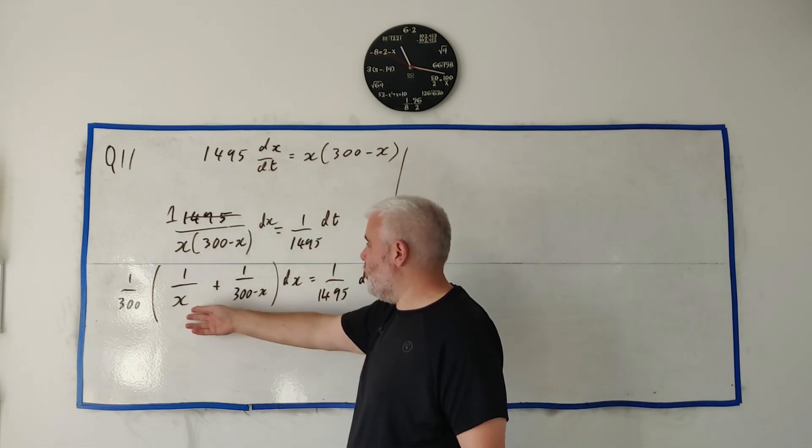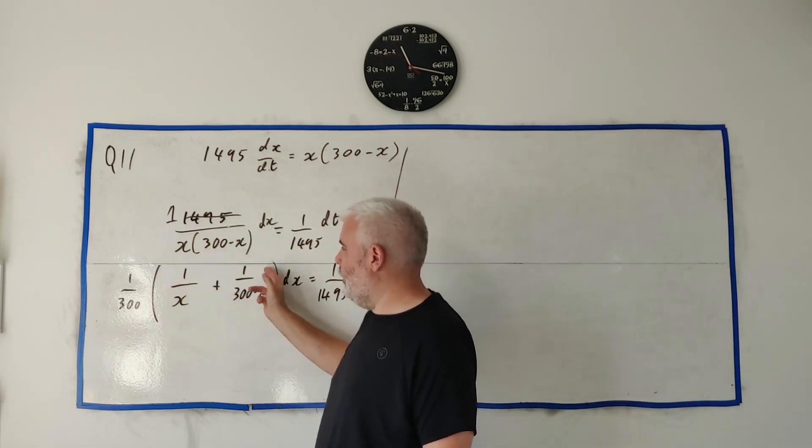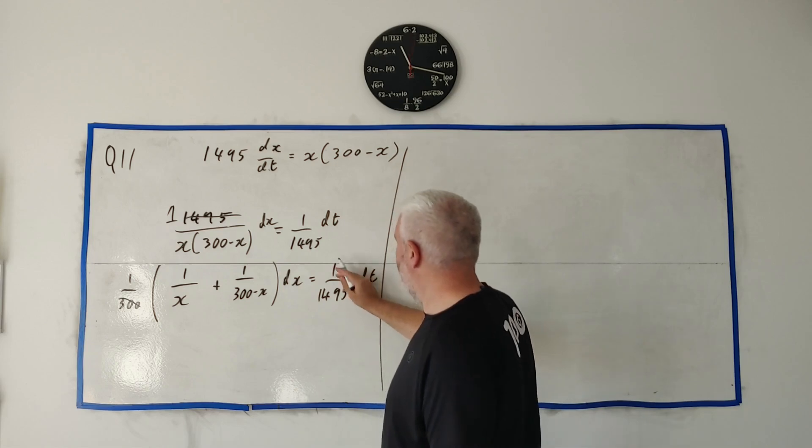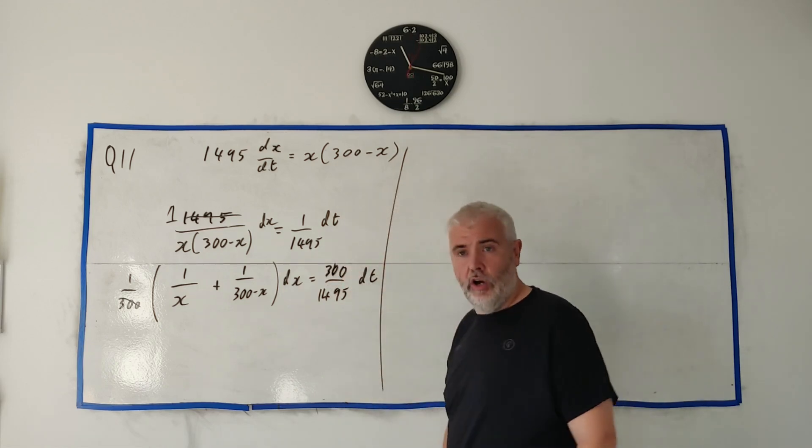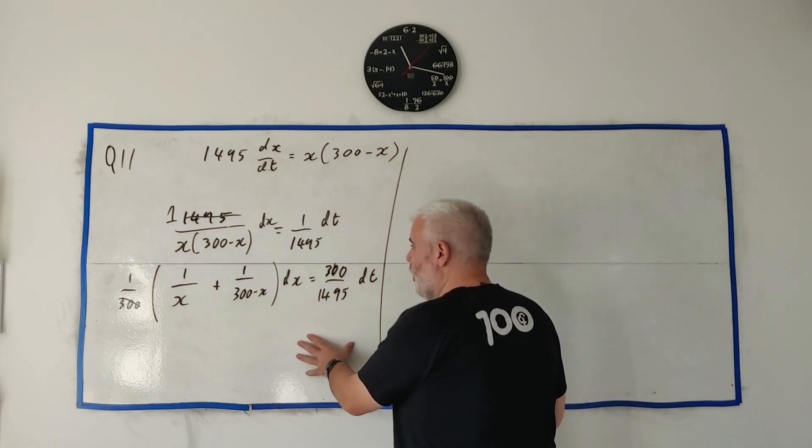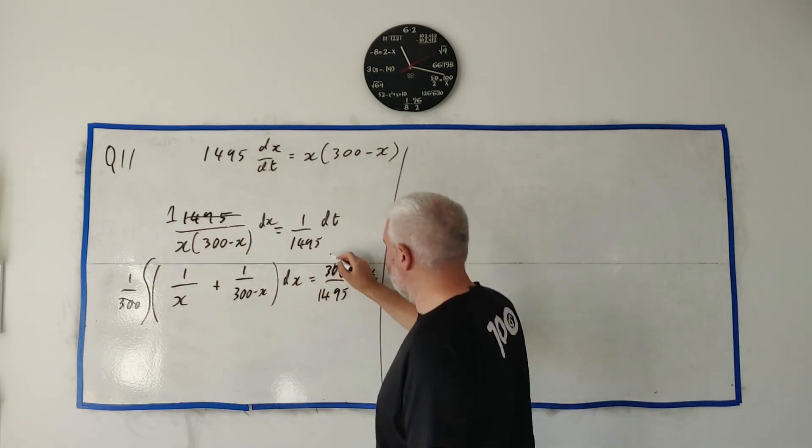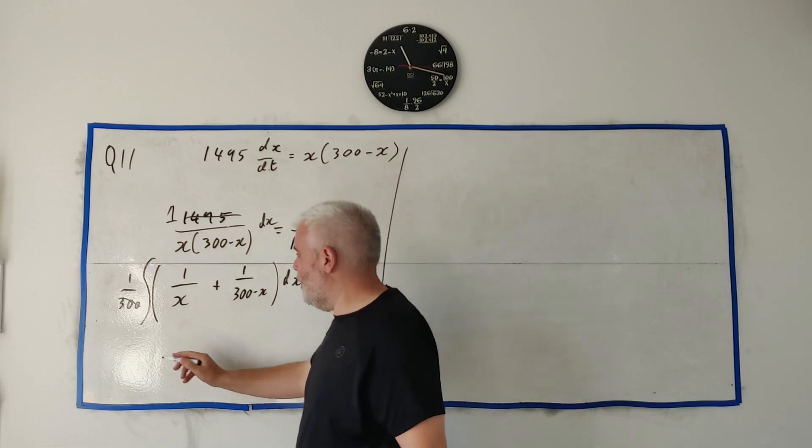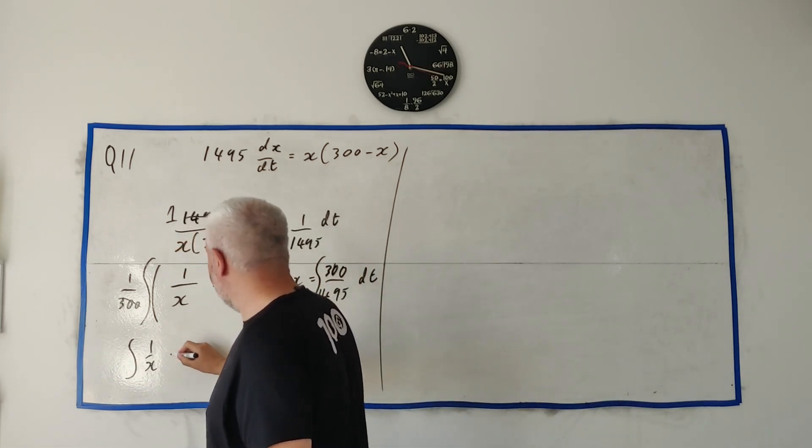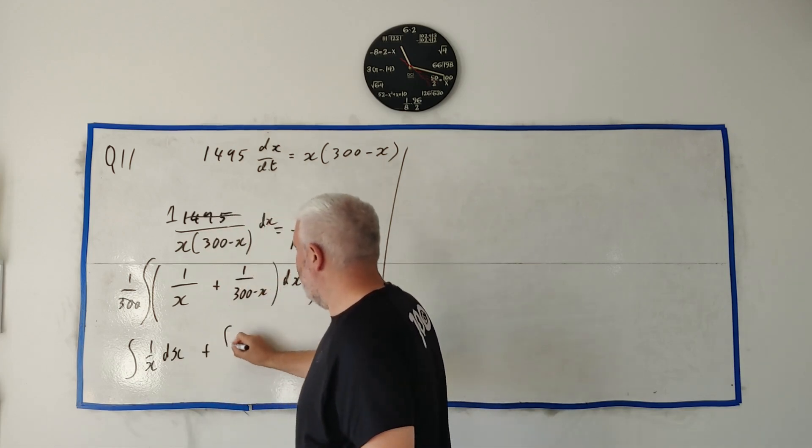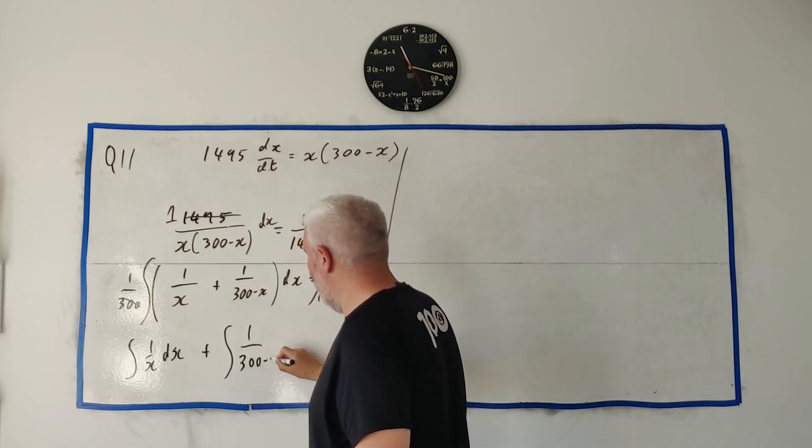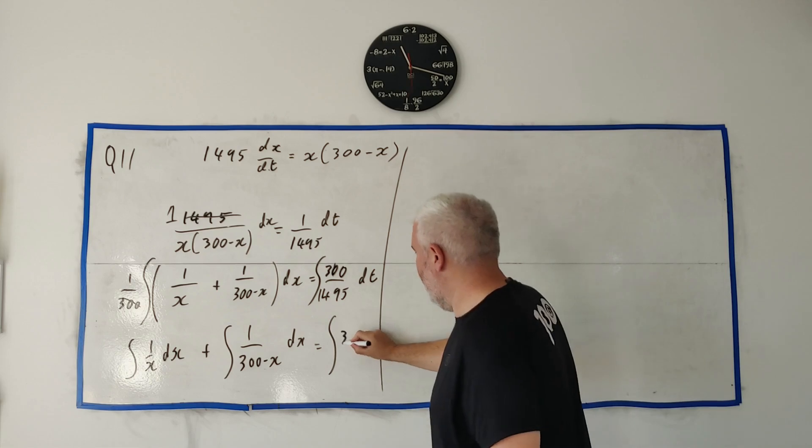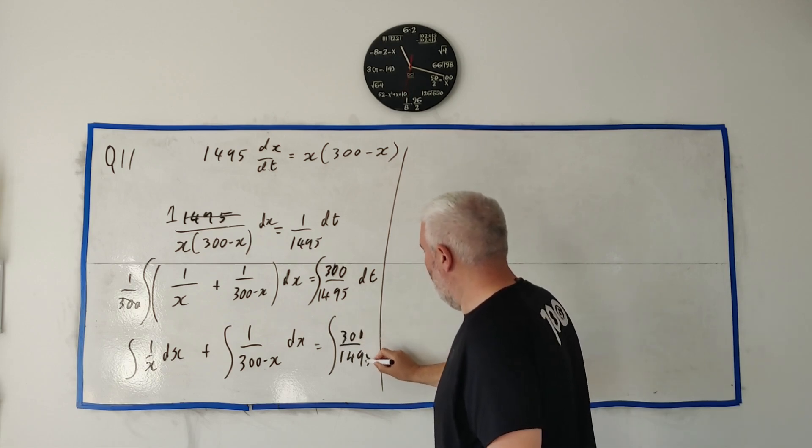So, replacing this left side with that partial fraction gets me this. 1 over 300 went into both of them. So, I brought it outside and, in fact, I'll even multiply across by 300. And 300 will disappear from here and appear over here. Now, we have two integrations. So, we can go ahead and integrate both sides. We can integrate this side with respect to x, integrate this side with respect to t, and we'll end up getting a solution out. That's what I'm going to be doing here.